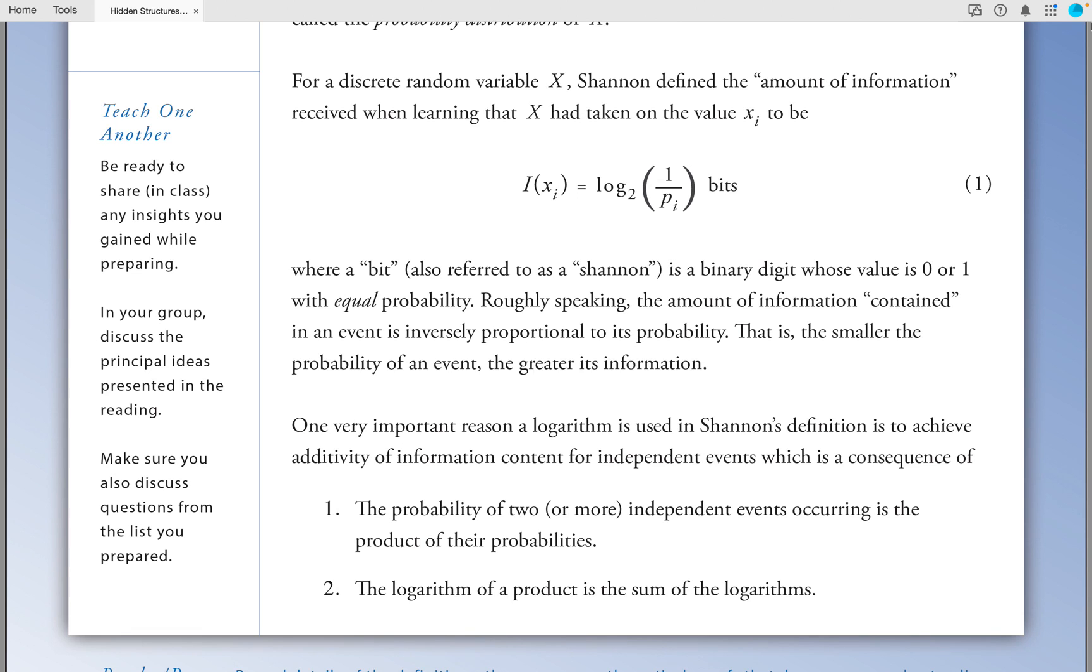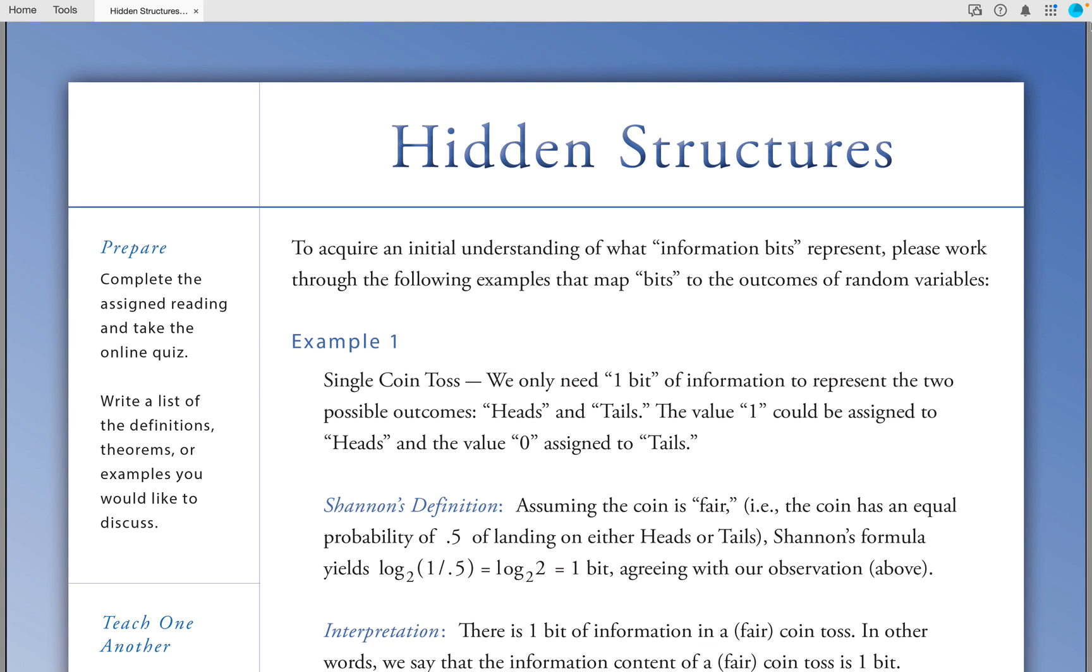One very important reason a logarithm is used in Shannon's definition is to achieve additivity of information content for independent events, which is a consequence of 1) the probability of two or more independent events occurring is the product of their probabilities, and 2) the logarithm of a product is the sum of the logarithms. To acquire an initial understanding of what information bits represent, please work through the following examples that map bits to the outcomes of a random variable.